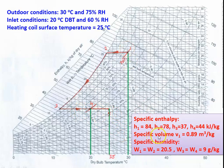From the chart: h1 = 84, h2 = 78, h3 = 37, and h4 = 44 kilojoules per kilogram. Specific volume of air at inlet condition is 0.89 cubic meter per kg. Specific humidity: w1 = w2 = 20.5 g/kg, and w3 = w4 = 9 grams per kilogram.